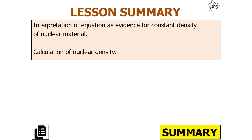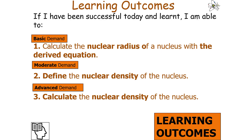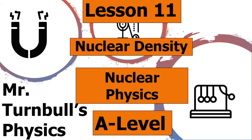To summarise today's lesson, we can interpret the nuclear density equation as evidence for the constant density of nuclear material, and we can calculate the nuclear density. We should now be able to calculate the nuclear radius of a nucleus with a derived equation, define the nuclear density, and calculate it. I hope you've enjoyed today's lesson on nuclear density, part of the nuclear physics topic in AQA A-level physics. Thank you very much for watching, and have a lovely day.